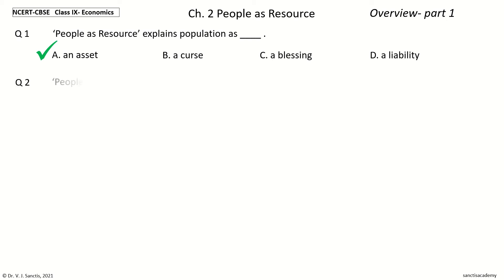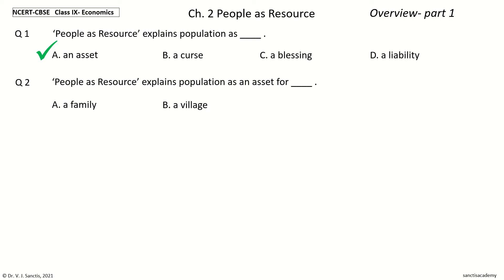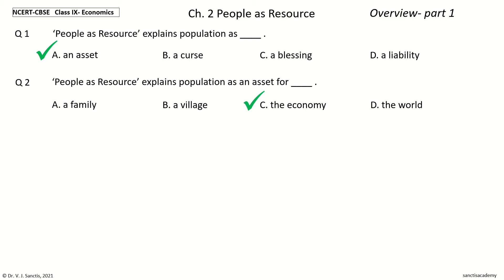Question 2: People as Resource explains Population as an Asset for ___. The options are: a family, a village, the economy, the world. Your time to choose. And the answer is: the Economy. So, People as Resource explains Population as an Asset for the Economy.